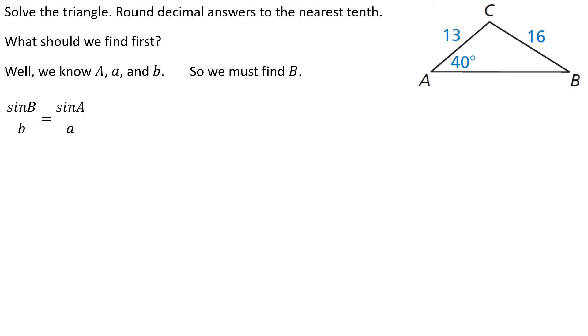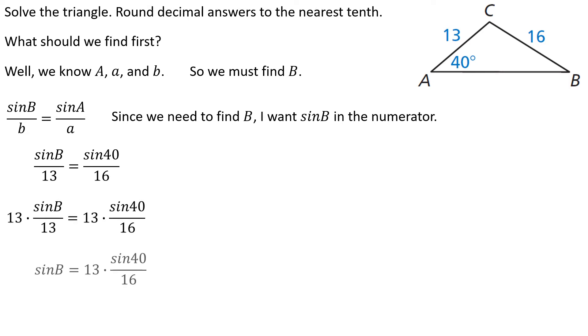Notice I put sine of B in the numerator. Since I need to find angle B, I'm going to have sine of B in the numerator. I can plug in three of the four values. And now to find the missing value. Well, let's multiply both sides by 13.